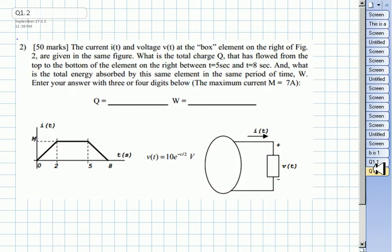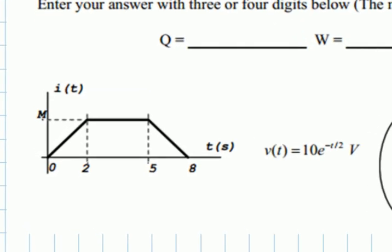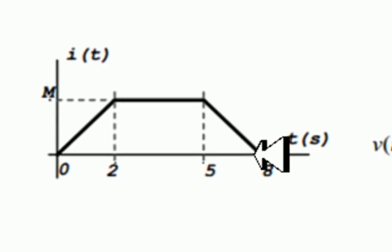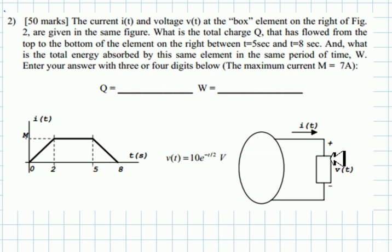Let's go for the solution of the second question. Let's read it. The current IX, this one, and the voltage Vt, this one. At the box element on the right of the figure, this element current and voltage is given in the figure. What is the total charge Q that has flowed from the top to the bottom of the element on the right? Between 5 seconds and 8 seconds, between these two points in time. And also, what is the total energy absorbed by the same element in the same period of time? The maximum current M is 7 amps, so let me write for this type of exam, this is 7 amps.